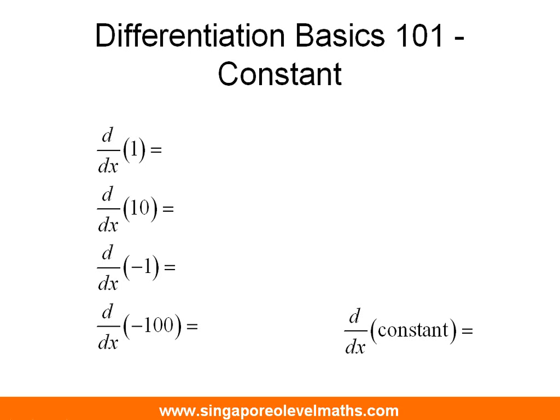The first example is how do we go ahead and differentiate a constant. If you need to differentiate 1, what answer will you get? It will be 0. What happens if you need to differentiate 10? It is 0. What happens when you need to differentiate a negative number like negative 1? The answer is 0. And differentiation of negative 100? The answer is 0 again. In general, if you need to differentiate any constant by itself, you will get 0.